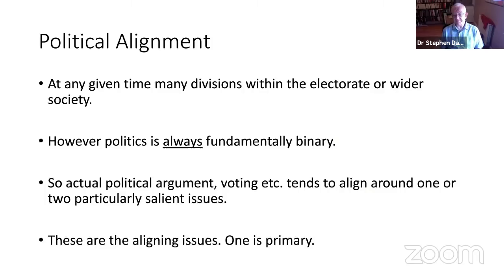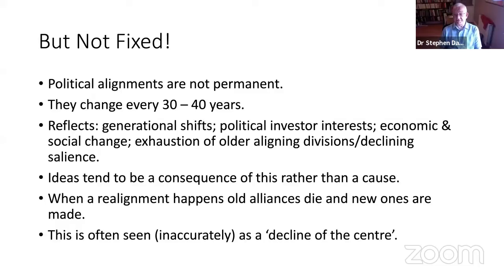Similarly in parliament, we don't elect MPs as independents who form shifting coalitions on an issue-by-issue basis — we always have two broad sides. This is true even in countries with proportional representation; there may be more parties, but they still fall into two broad camps. The reason is that out of that huge range of political disagreements, there's always one or two that are particularly salient — the aligning issues. People decide where they sit in the binary division based on their position on those big salient issues, and so the electorate is divided into sometimes two, sometimes as many as four large blocks of voters.